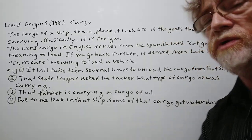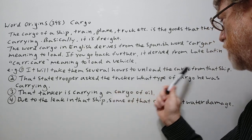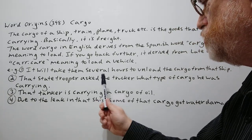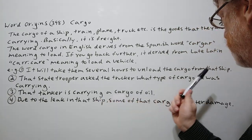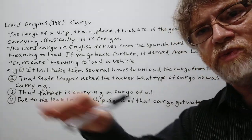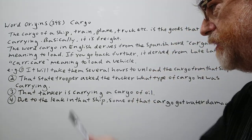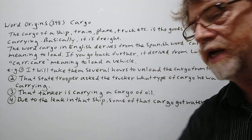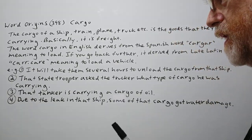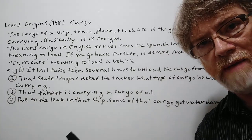We've got four examples here to show just how it's used. Number one: It will take them several hours to unload the cargo from that ship. Number two: That state trooper asked the trucker what type of cargo he was carrying. A state trooper is one of those policemen along the state highways. Number three: That tanker — like the big oil tankers — that tanker is carrying a cargo of oil. Number four: Due to the leak in that ship, some of the cargo got water damage.